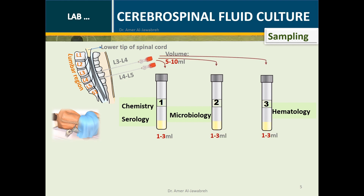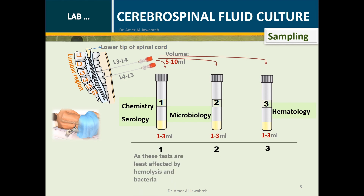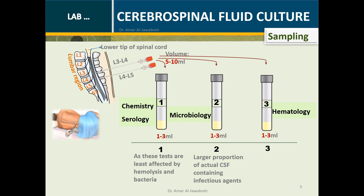Tube 1 is least affected by hemolysis. Tube 2 largely contains the actual infectious agents. Tube 3 has the least cells from traumatic tap.